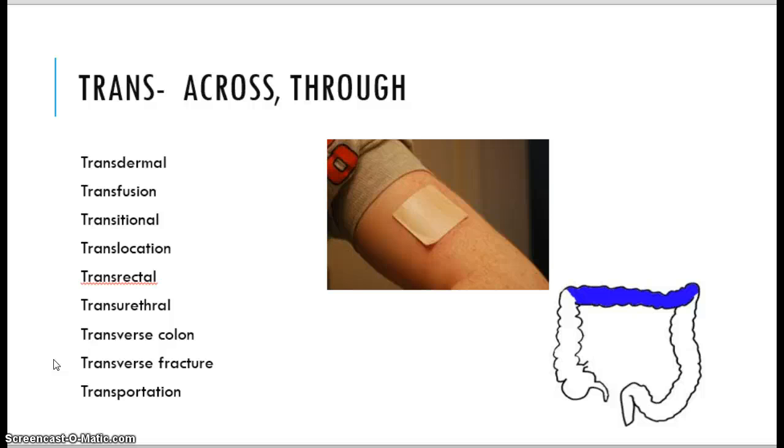The transverse colon is the picture that you see on the bottom right corner. Transverse colon is the one that goes across the abdomen and helps to form that large intestine. Transverse fracture is also used to say across. So it's a fracture that goes all the way through a bone. And then we also see trans in something like transportation. It takes you across town or across the country if you were using transportation.